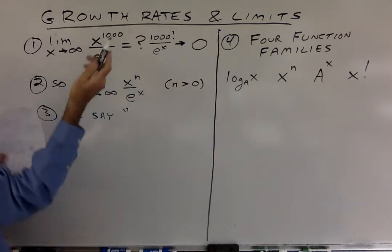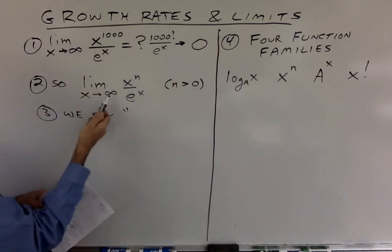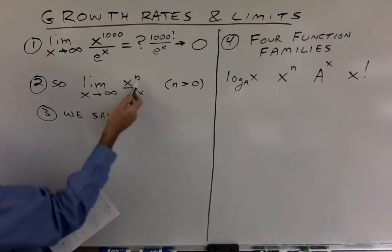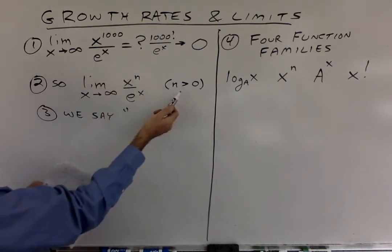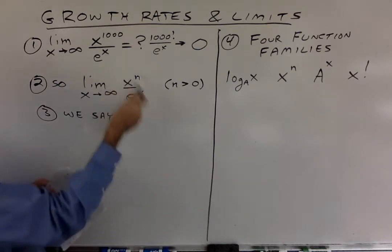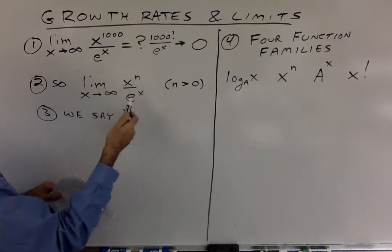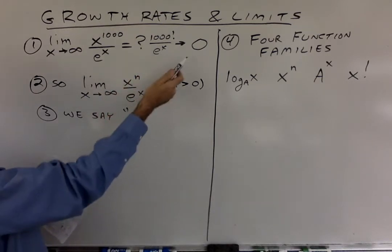Think of what general form that has. x is getting bigger and bigger, x to the n over e to the x. This is called a power function over an exponential function. And we can do L'Hopital to this over and over again, and eventually we're going to get zero.